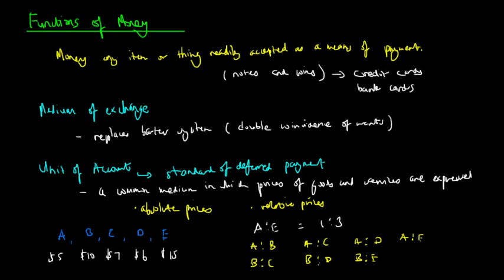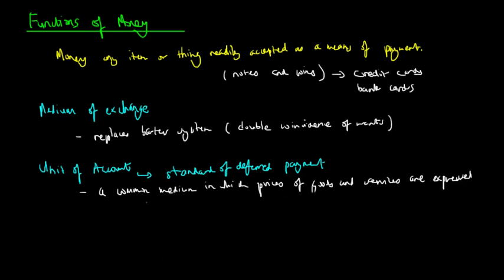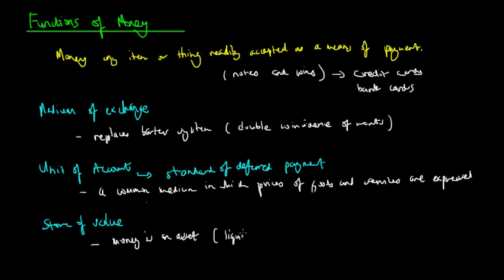Lastly, money can also be expressed as a store of value. Money is one of many forms of assets, and money doesn't lose value too much, apart from inflation, as do many other assets. So it is the most liquid of all assets, meaning it can be readily exchanged for goods and services. It is convenient, safe, and the price doesn't fall like some other assets such as shares. It doesn't risk the value of money falling dramatically, especially if you put it in a bank and receive interest. So we're going to look at an example of why money as a store of value is so important.